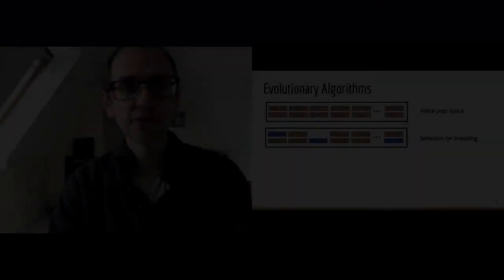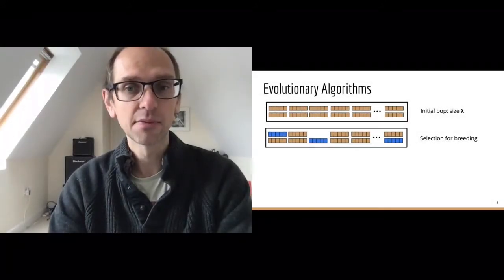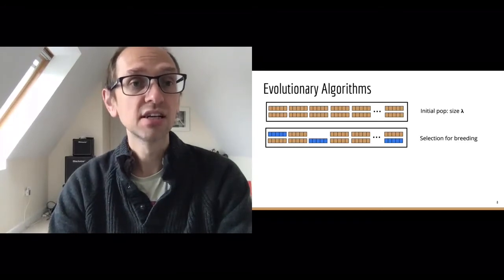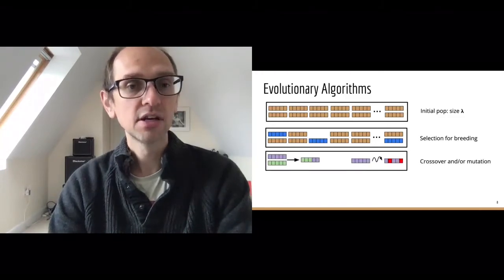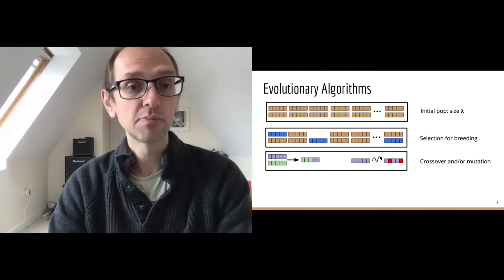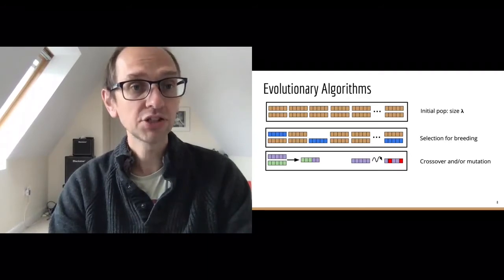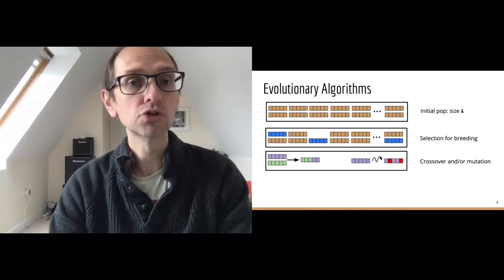The next stage in evolutionary algorithms is to decide which chromosomes to breed together. There are various selection operators to choose from, and depending on whether you're using a full GA or an evolutionary strategy, they may be very different approaches. Once we've selected chromosomes for breeding, they need either to be bred or mutated. Breeding is sometimes called recombination or crossover — it means using two parents to generate one or more children.